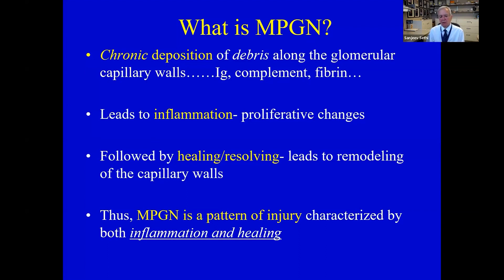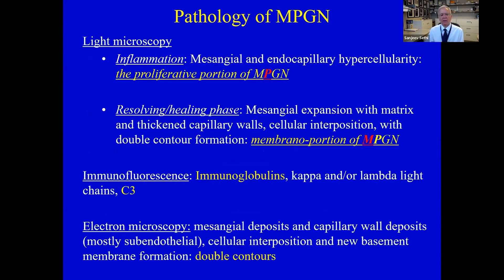More often than not, it's a mixed picture of inflammation and resolving happening at the same time. Looking at MPGN in more detail: the inflammatory part is the proliferative component — that's where the term membranoproliferative glomerulonephritis comes from. The 'P' is proliferative, and the resolving portion is the 'M' — the membrane portion — where you get mesangial expansion with matrix and double contouring. The proliferative portion refers to mesangial and endocapillary hypercellularity, and the membrane portion refers to GBM thickening and mesangial expansion.